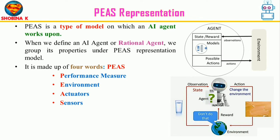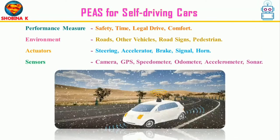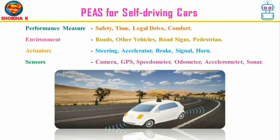Based on the properties of an agent, they can be grouped or differentiated using PEAS: Performance measure defines the success of an agent; Environment is the surrounding of an agent at every instant, which changes with time if the agent is in motion; Actuators deliver the output of an action to the environment; and Sensors are the receptive parts that take input for an agent. To design a rational agent, we must specify the task environment using the PEAS framework.